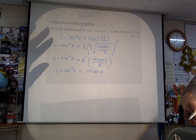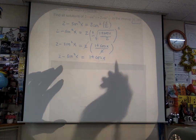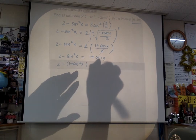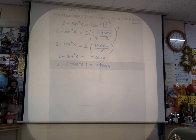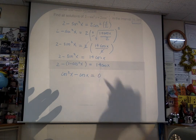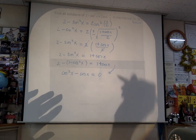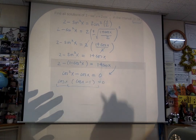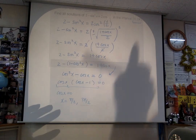Maybe you can stop the video now and start solving. What I would do: this has two different trig functions, so I want to make it into one. Rewrite sine squared x as 1 minus cosine squared x using the Pythagorean identity: 2 minus (1 minus cosine squared x) equals 1 plus cosine x. When you simplify, you get cosine squared x minus cosine x equals 0.